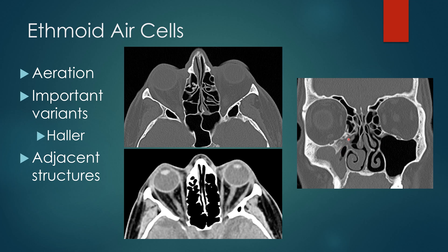On the right side there is obstruction of the osteomeatal complex. When you look at the ethmoid air cells, remember what's next to them — you have your orbit — and disease processes can affect either structure. You can have an ethmoid sinusitis that causes a periosteal abscess in the orbit, or you can have an orbital process that invades into the ethmoid air cells.